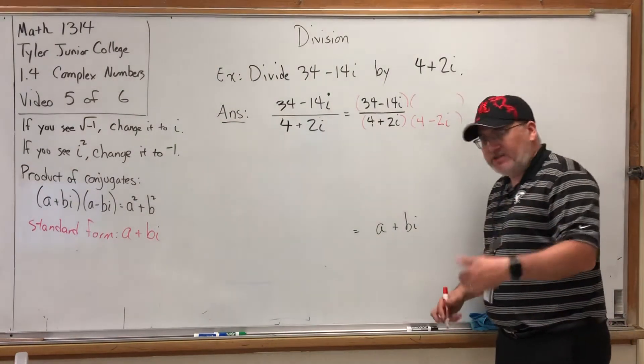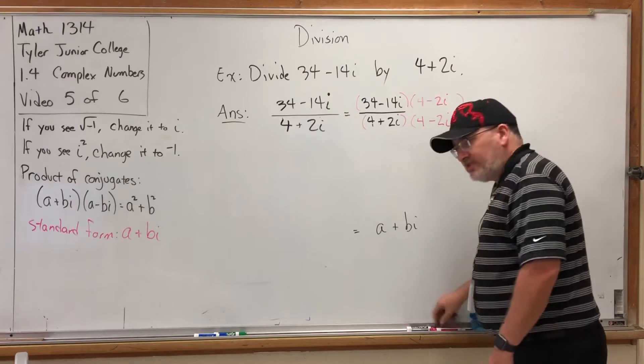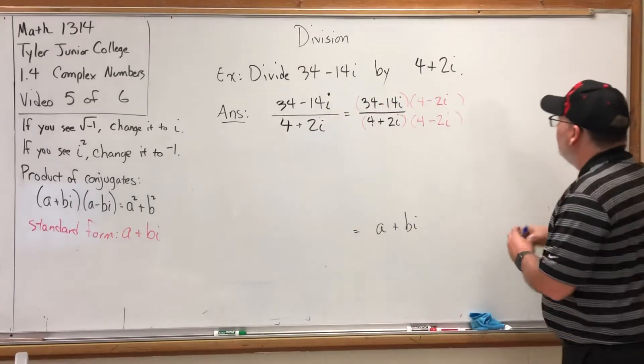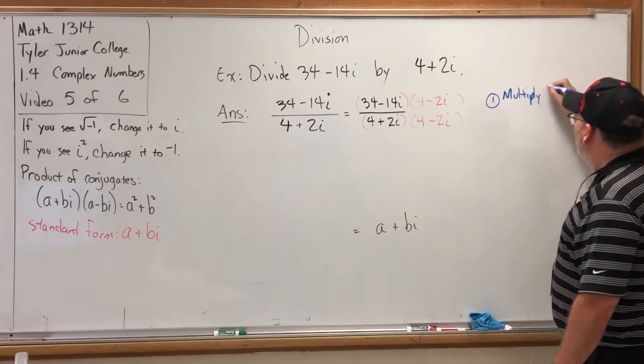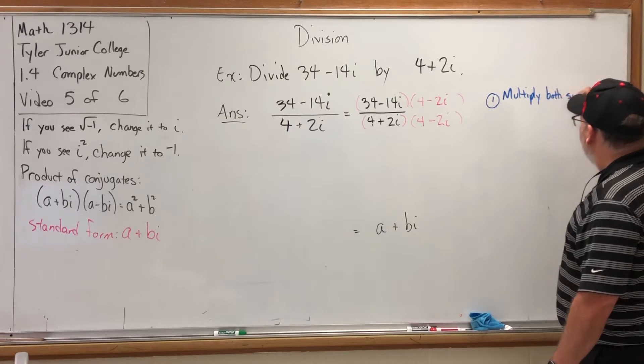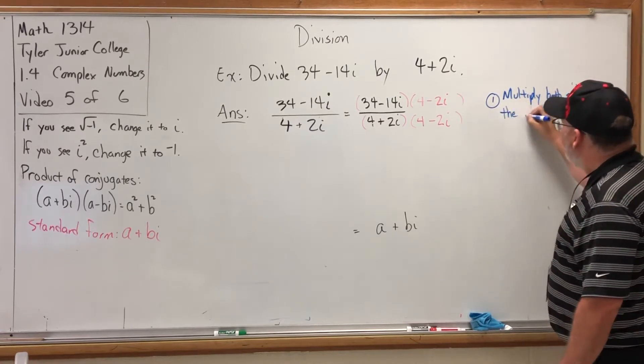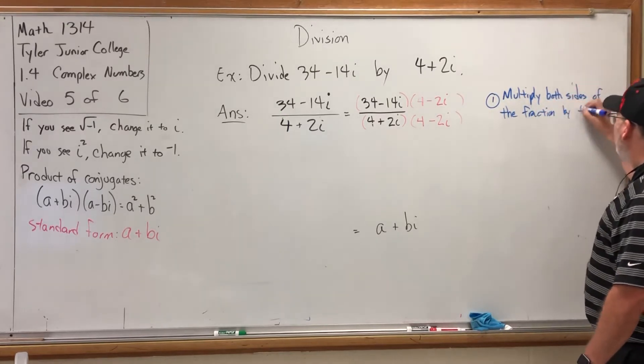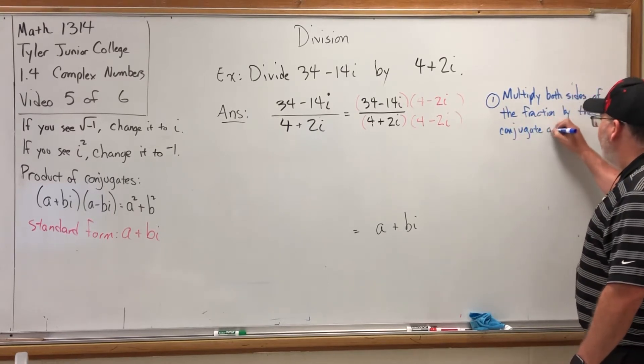We're going to play this out, but I want to go ahead and document the steps. Step number one: multiply both sides of the fraction by the conjugate of the denominator.